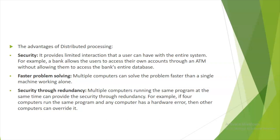Faster problem solving means multiple computers can solve a problem faster than a single machine working alone. Security through redundancy means multiple computers running the same program at the same time provide security. For example, if four computers run the same program and one has a hardware error, the other computers can override it.